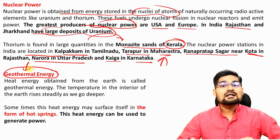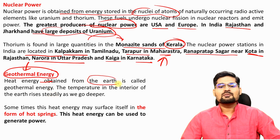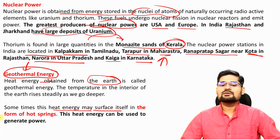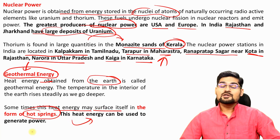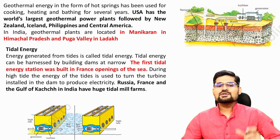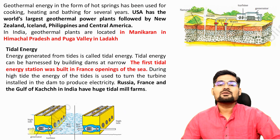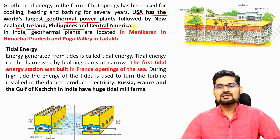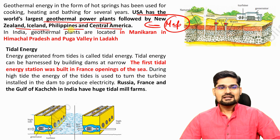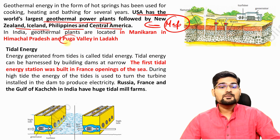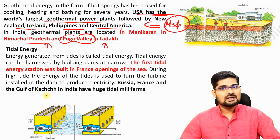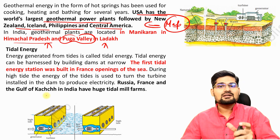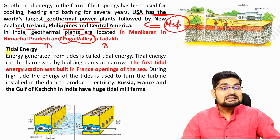Geothermal energy is heat energy obtained from inside the earth from water and geysers, and is still largely untapped in India. Hot springs coming to the surface can be used to generate electricity. The USA has the world's largest geothermal power plants, followed by New Zealand, Iceland, the Philippines, and Central America. In India, potential areas include Puga Valley in Ladakh and Manikaran in Himachal Pradesh, which have hot water springs and remain areas for future research and development.